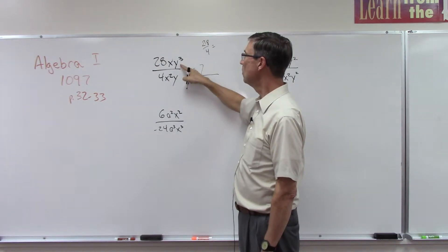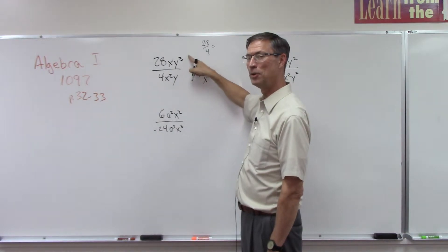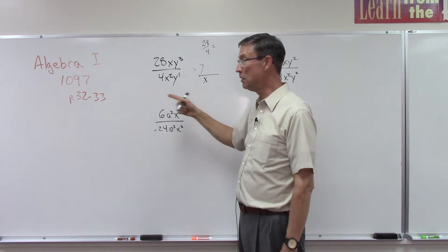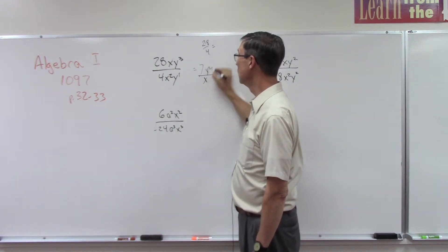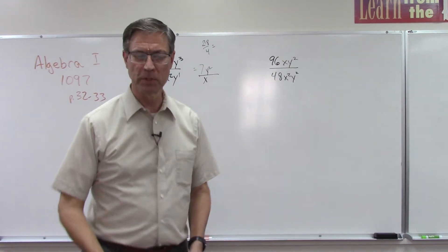Looking at the y, we have a larger y on the top. You see y to the third? Down here is y to the 1. So we subtract 3 minus 1, just like we did back on page 31. So we get y squared on the top.